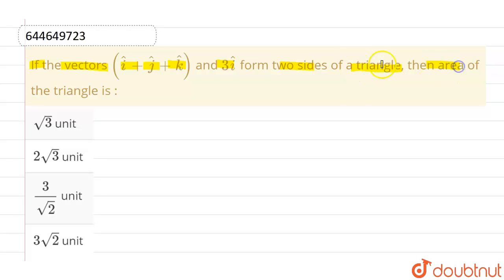two sides of a triangle then area of the triangle is. The given options are root 3 unit, 2 root 3 unit, 3 by root 2 unit and the last option is 3 root 2 unit.